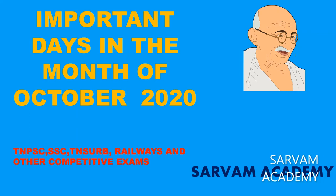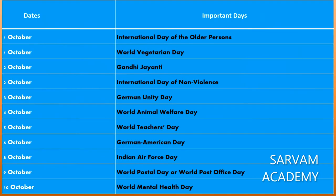In this video, we are going to see important days in the month of October 2020. October 1 is the International Day of Older Persons and also World Vegetarian Day. October 2 is Gandhi Jayanti, and also the International Day of Nonviolence.